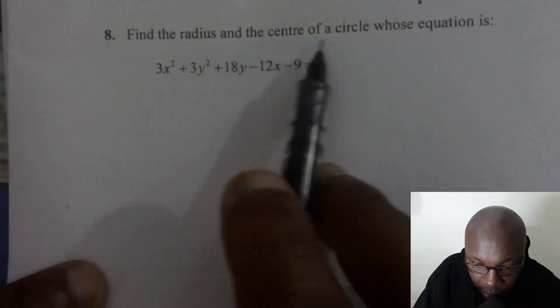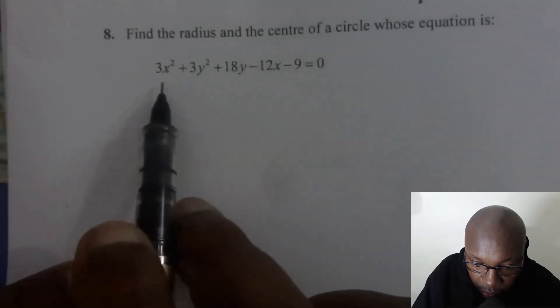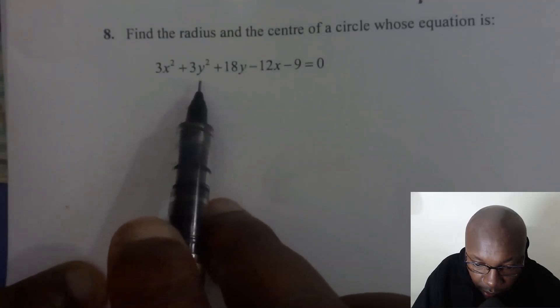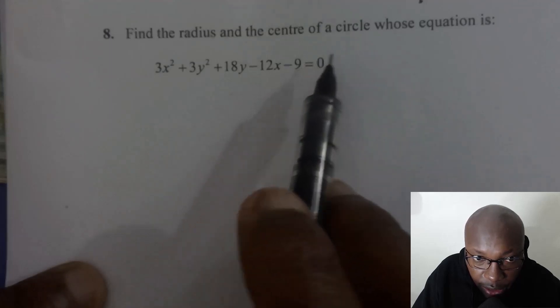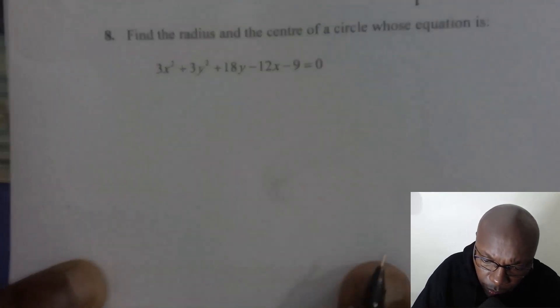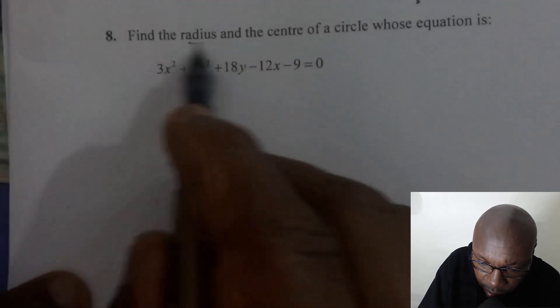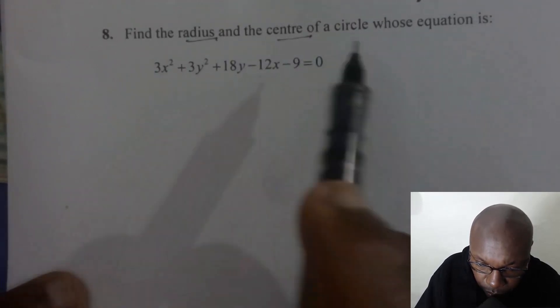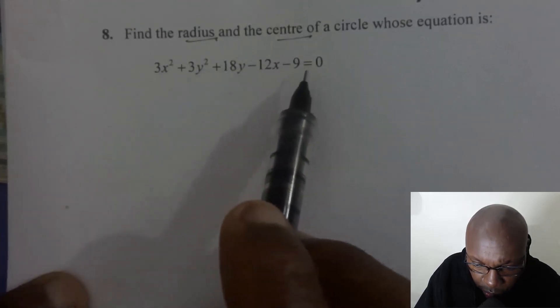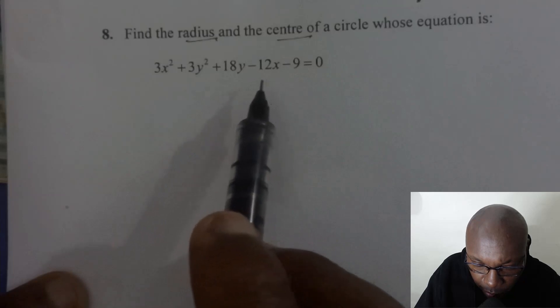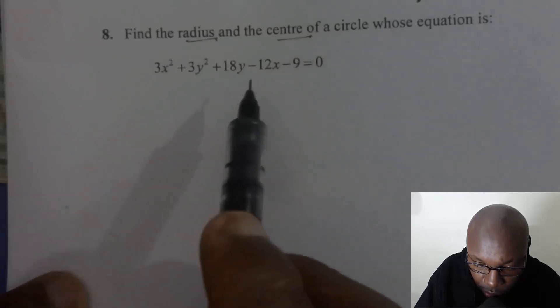Find the radius and the center of the circle whose equation is 3x squared plus 3y squared plus 18y minus 12x minus 9 equals 0. To find the radius and center of the circle, there are a few things that you need to do. When you look at all these terms, it is possible to divide each and every term in order to simplify the equation by 3.